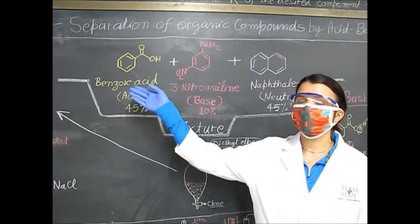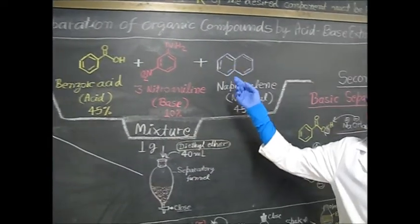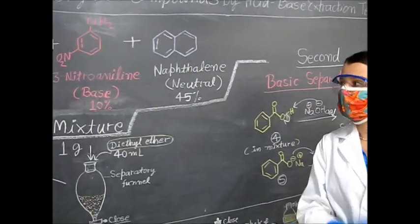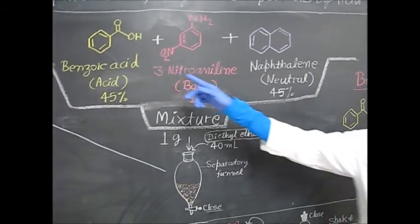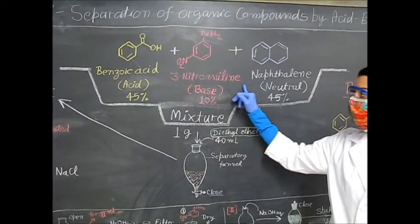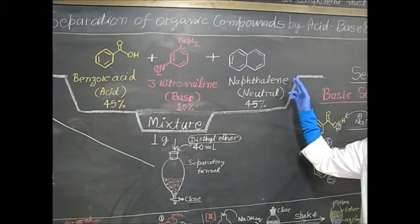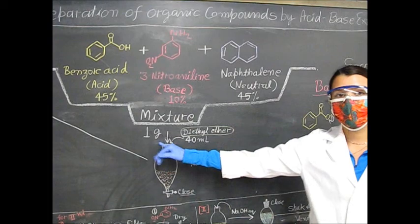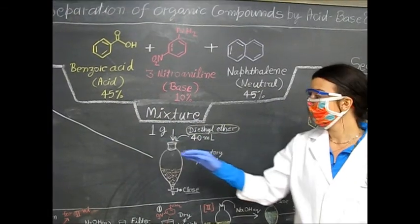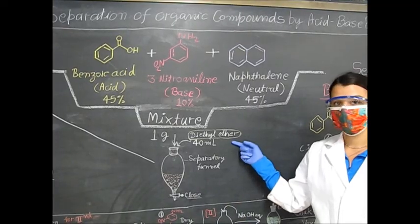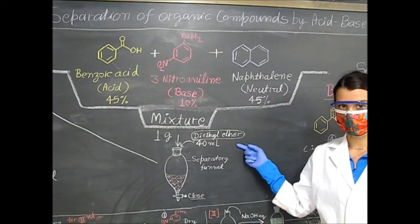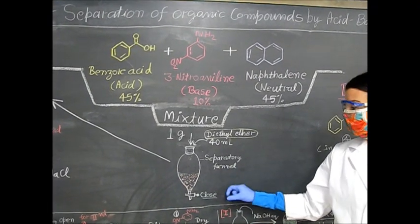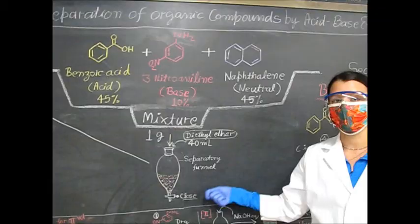In experiment 3, we are going to be doing a separation of organic compounds by acid-base extraction techniques. You will be given a mixture of benzoic acid at 45%, 3-nitroaniline at 10%, and naphthalene at 45%. You will take one gram of this mixture, measured by mass, and dissolve it in 40 milliliters of diethyl ether. Then you will take this mixture and place it in a separatory funnel, making sure that the bottom is closed when you place the mixtures in there.